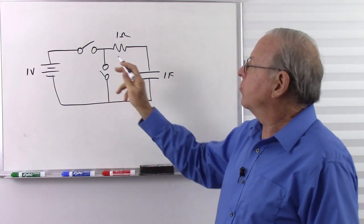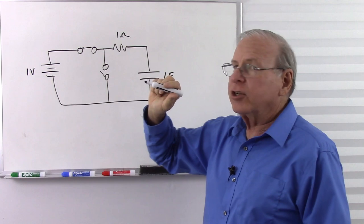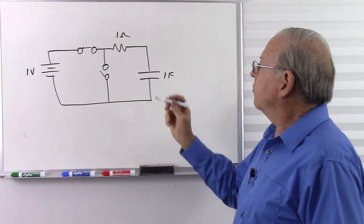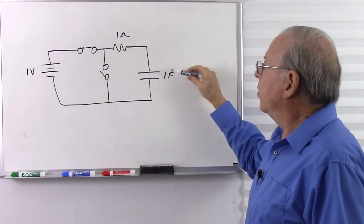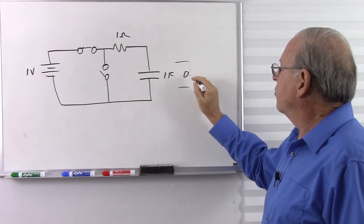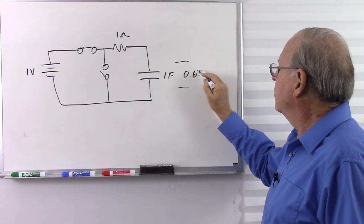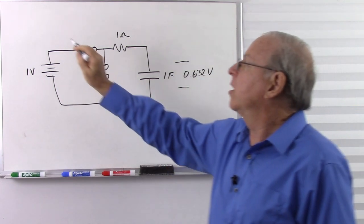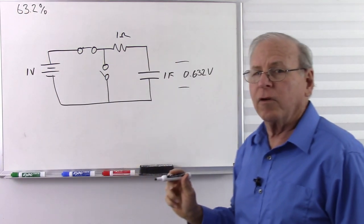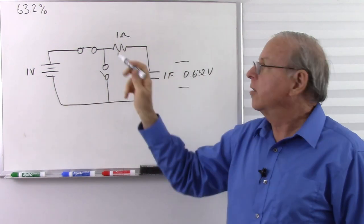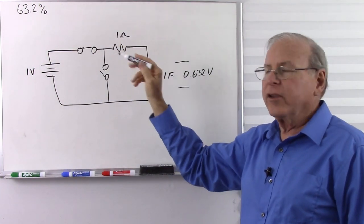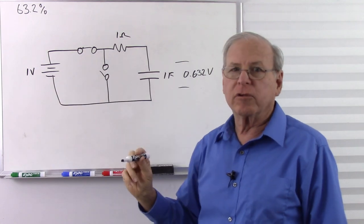We closed this switch for charging and allowed the capacitor to charge. We found that after 1 second with 1 ohm, 1 farad, 1 volt, the voltage across the capacitor had reached 0.632 volts, or 63.2% of the source voltage. So with 1 ohm and 1 farad, if we charge for exactly 1 second, we reach 63.2% of whatever the source voltage is.